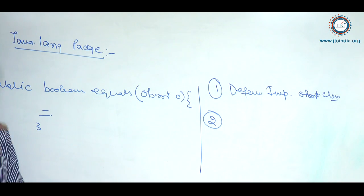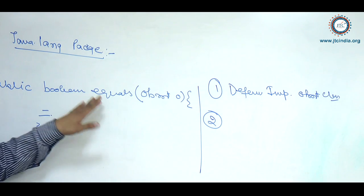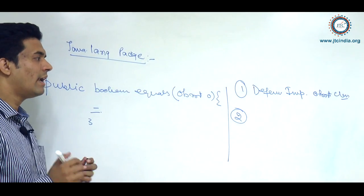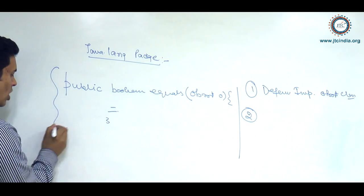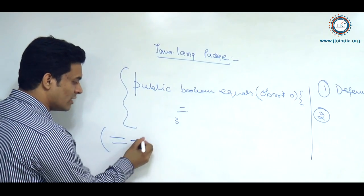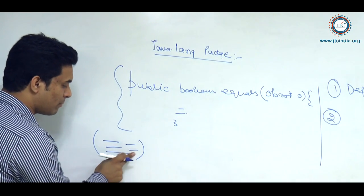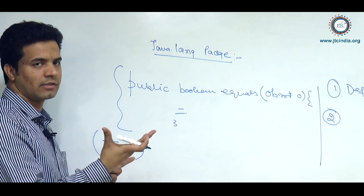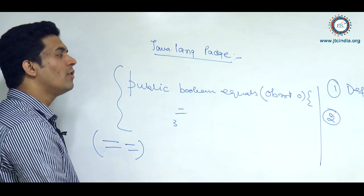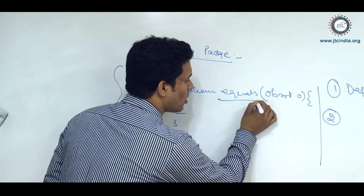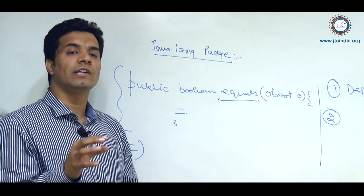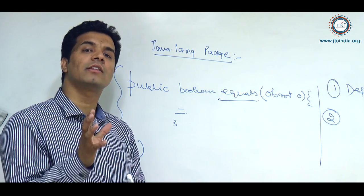If you are overriding the equals method inside your class with your own logic, then equals will compare the content of two objects. When we talk about the == operator, it is always going to compare the addresses or references of two objects. The equals method has already been overridden inside the String class in order to compare the content of two objects.